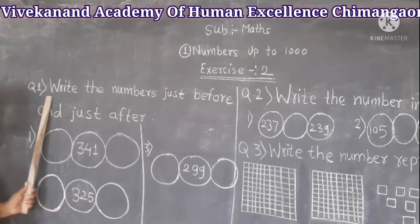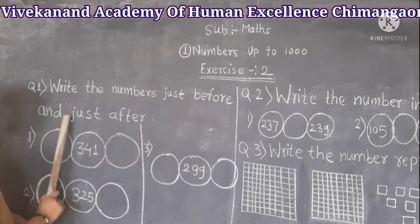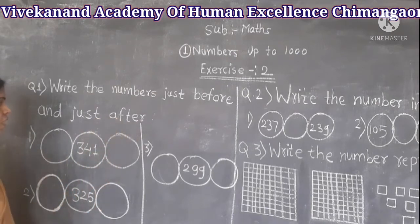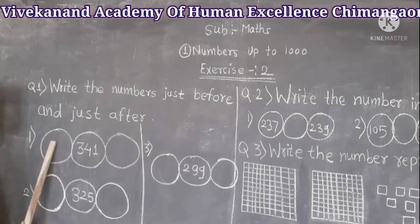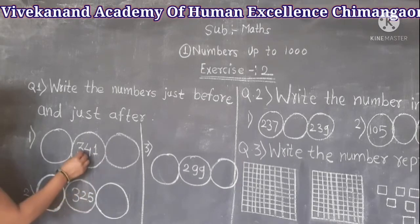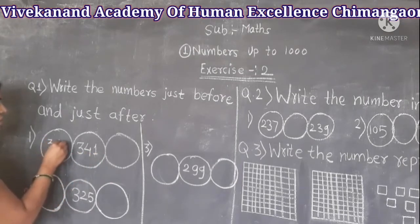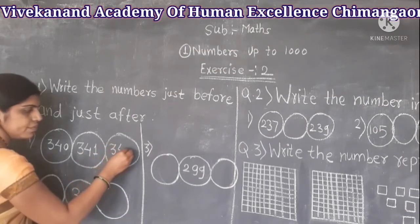The first question in exercise 2 is: write the numbers just before and just after. The first example is 341. The before number of 341 is 340, and the after number of 341 is 342.